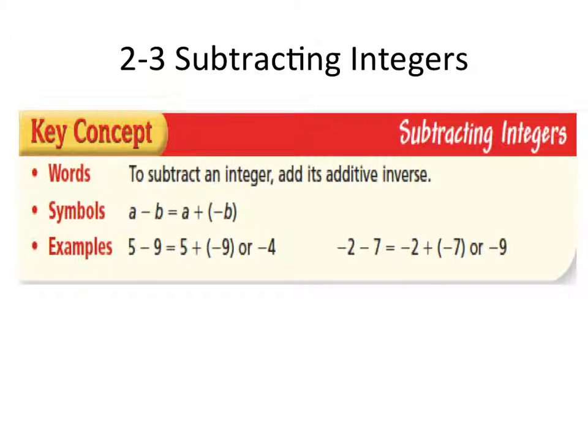As you can see in the examples below, we have 5 minus 9 is equal to 5, and then using the concept of additive inverse, we change the subtraction sign to addition, as you can see here, and what we did with the 9 was make it its opposite, or its inverse, which is negative 9.